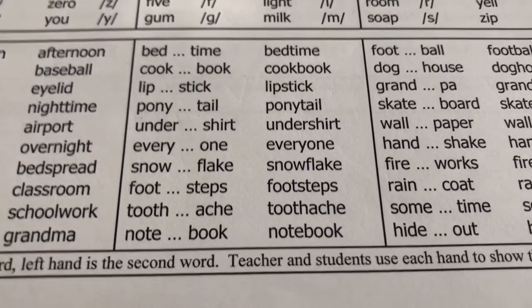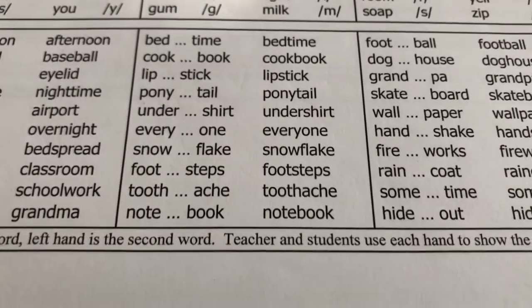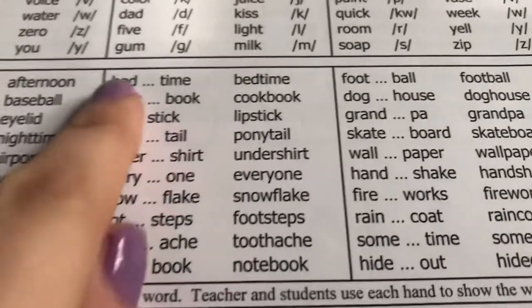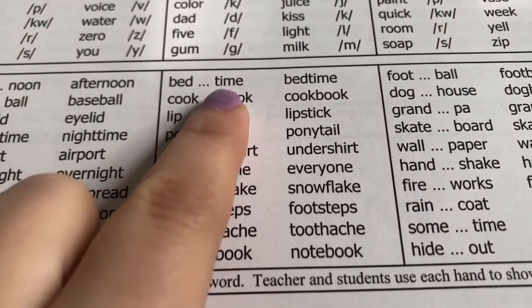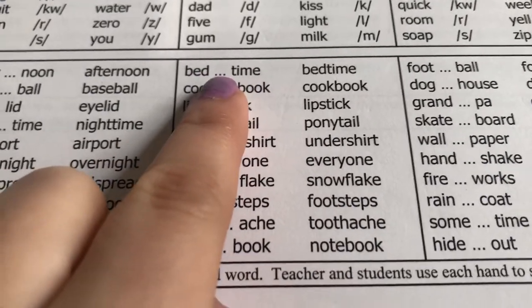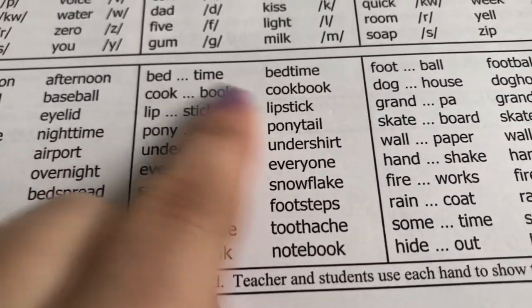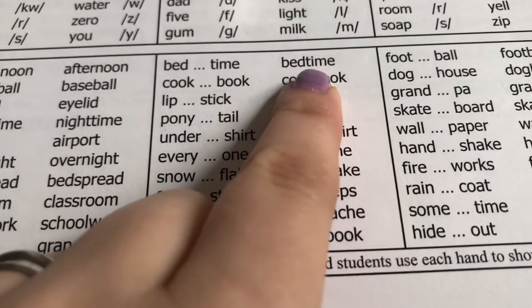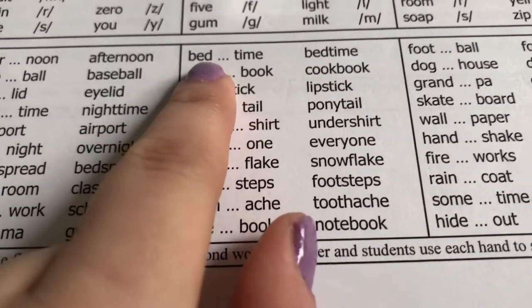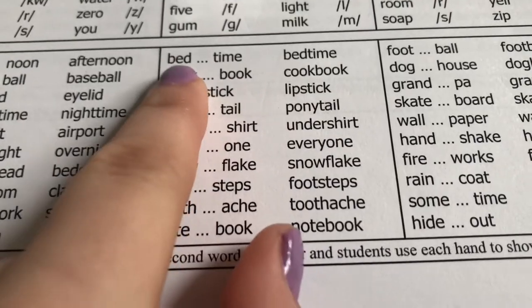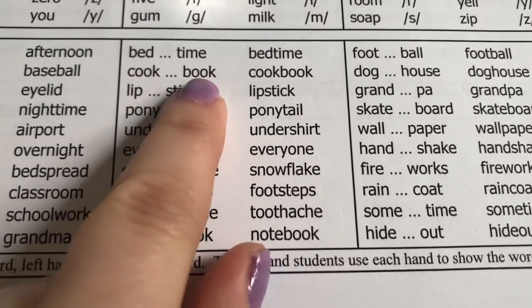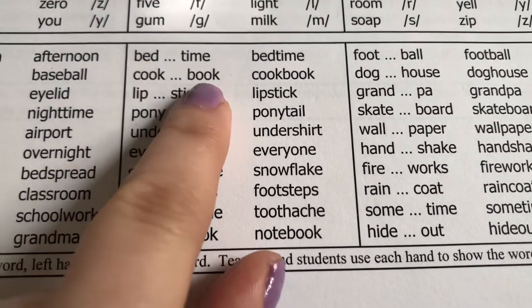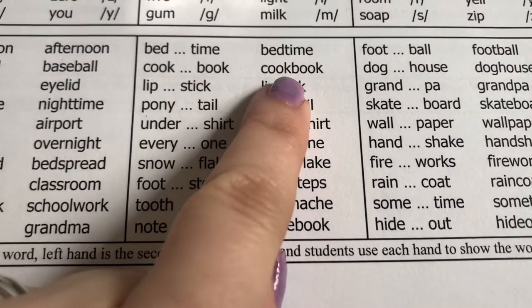Now we are blending our words together. So our first one is bedtime. I'm saying the words with a pause in between, and then your child will repeat the paused word and then move on to the compound word. Bed. Time. Bed. Time. Cook. Book. Book. Cookbook.